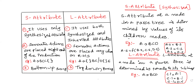Now see the first point. S-Attribute uses only Synthesized Attribute. S-Attribute always uses only one thing, that is called as Synthesized Attribute. But when it comes to the L-Attribute, it uses both Synthesized and Inherited Attributes. So S-Attribute is nothing but a Synthesized Attribute, and L-Attribute is nothing but both Synthesized and Inherited Attribute.